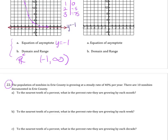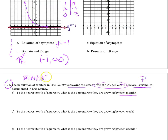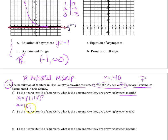The population of zombies in Erie County is growing at 40% per year, with 10 zombies initially — obviously unrealistic. To find the monthly percent rate of growth, this is a mindful manipulation. The given rate is per year, so first write the yearly function: a equals 10 times 1.40 to the t. For monthly, I want a 12t exponent because 12 times per year means monthly.